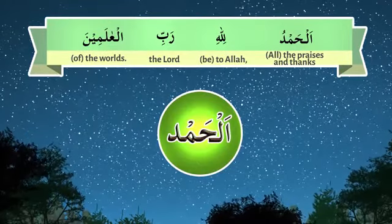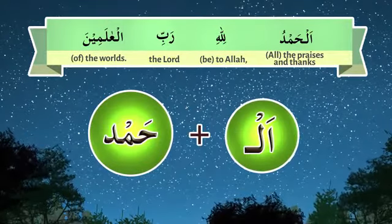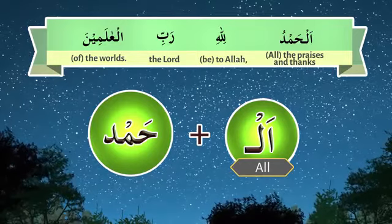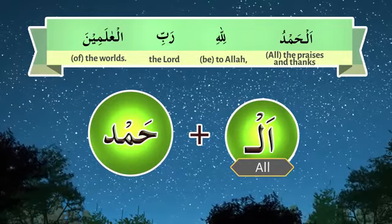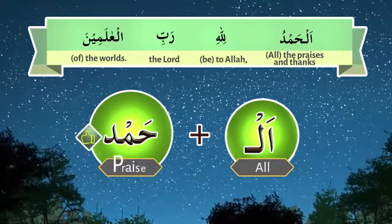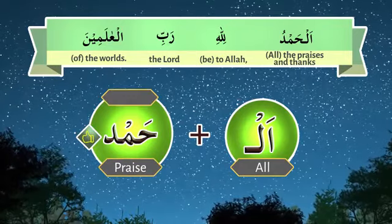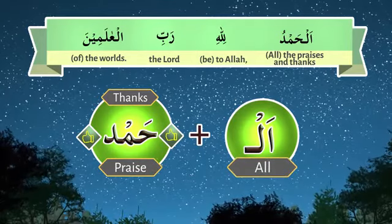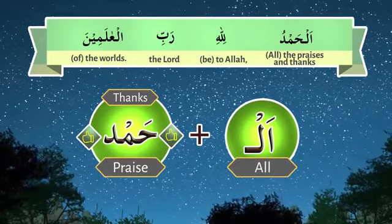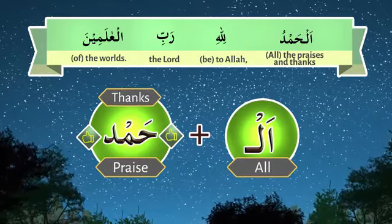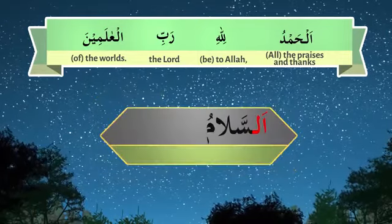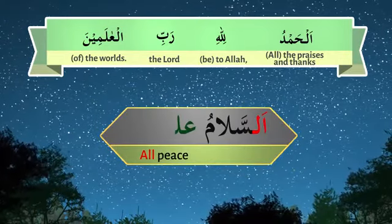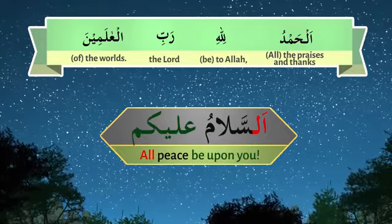Alhamdu is made up of two words. Al means 'all'; hamd has two meanings: praise and thanks. Therefore, alhamdu means 'all praises and thanks.' By the way, assalamu means 'all peace' and alaikum means 'be upon you.'